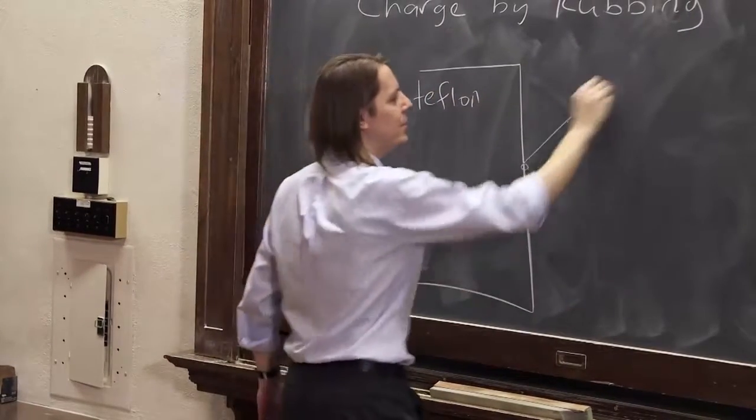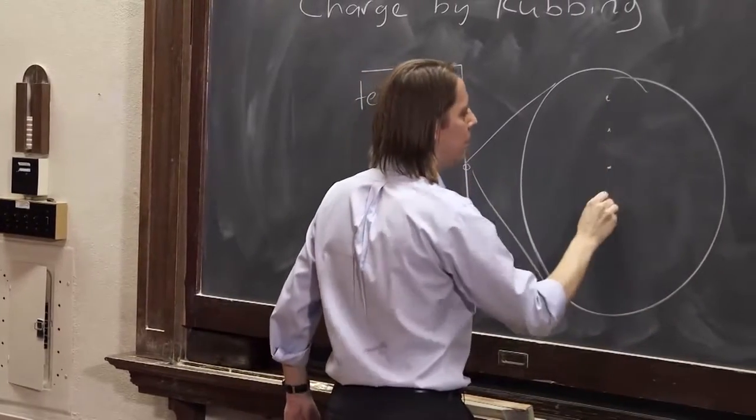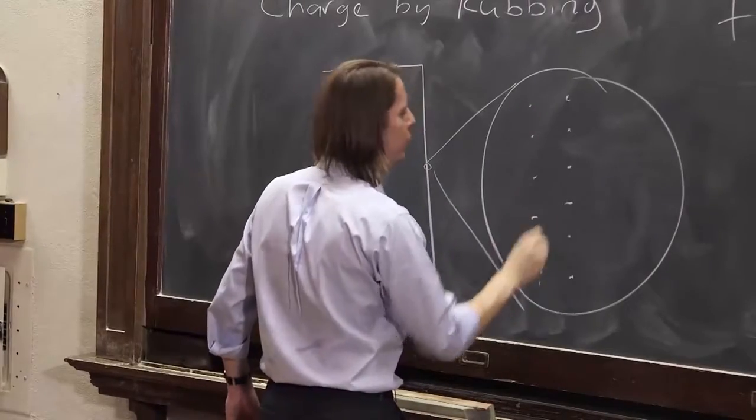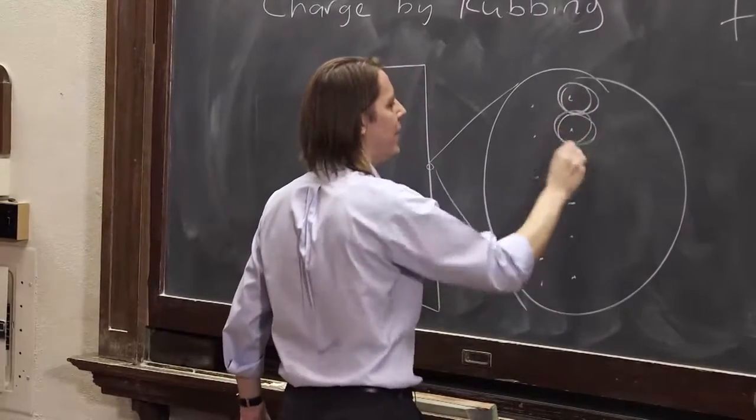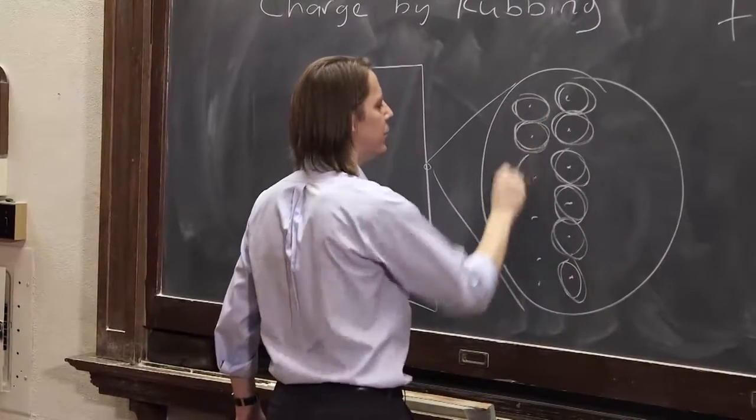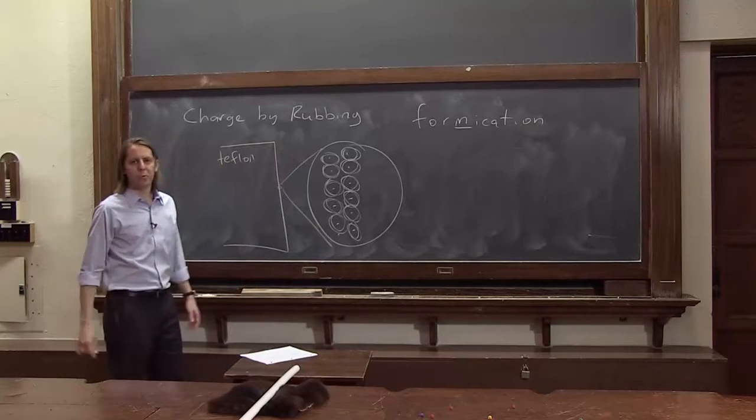So if we were to zoom in on its surface really hard, we would see atoms, a little nuclei here, and they would have electrons going around them. So we'd have positive and negative charge. It's right on top of itself. So this is how it's neutral.